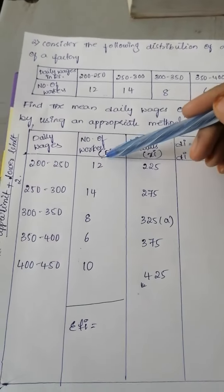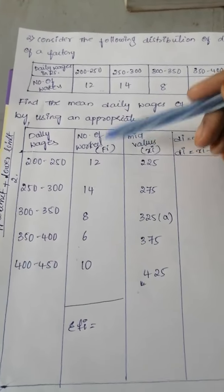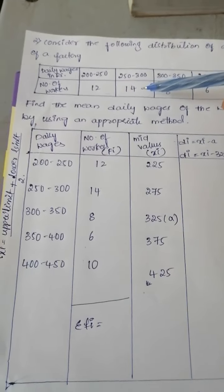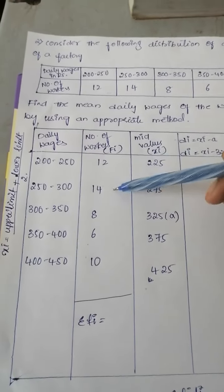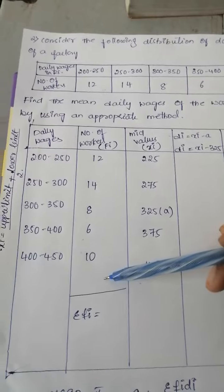Next column is number of workers, which means frequency, already given in the question. Twelve, fourteen, eight, six, ten.